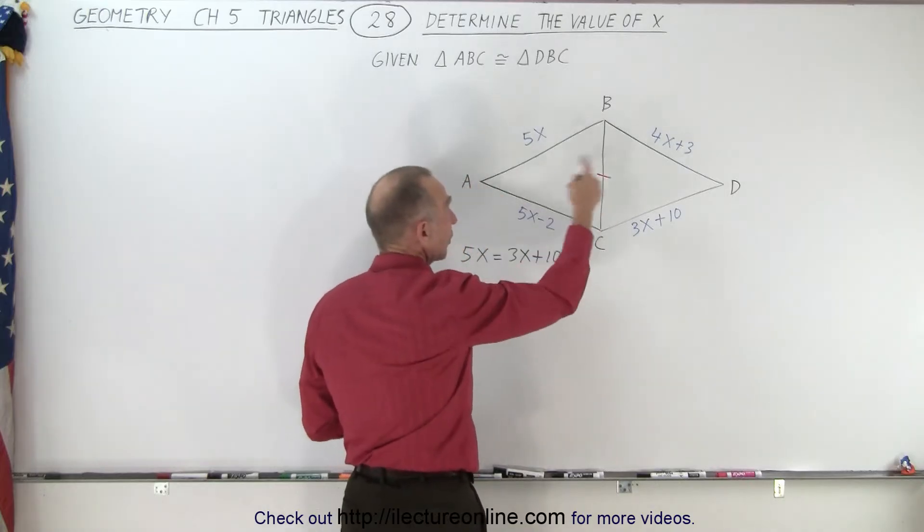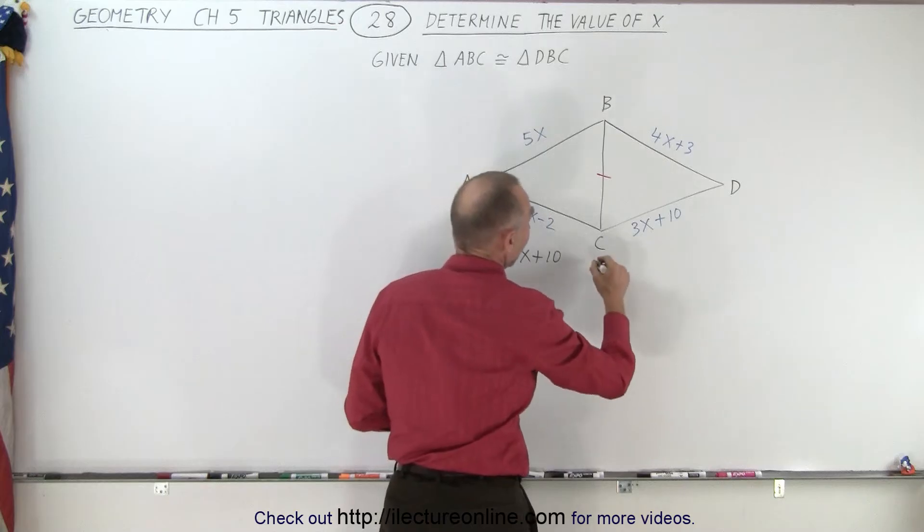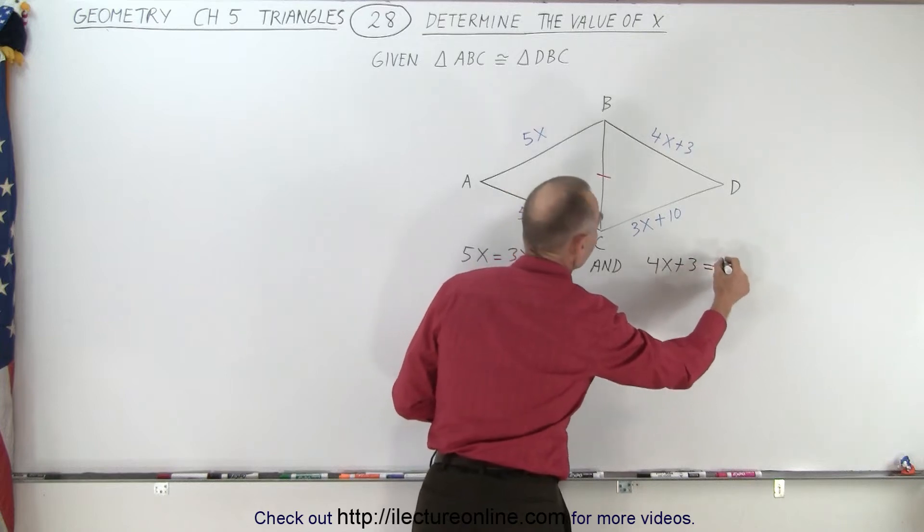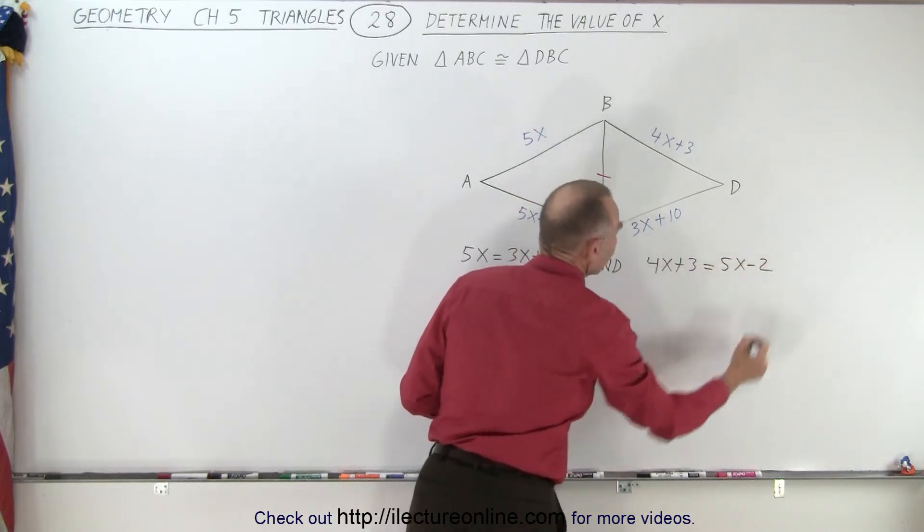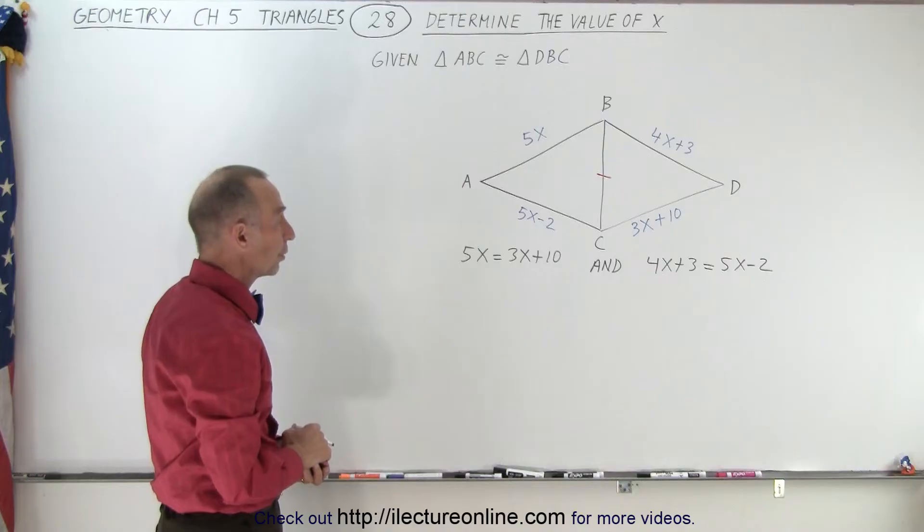Which also means that if the two triangles are congruent, that this side must have the same length as this side. And so we can say, and the condition must be that 4x plus 3 must equal 5x minus 2. Now those must both be correct at the same time for the two triangles to be congruent.